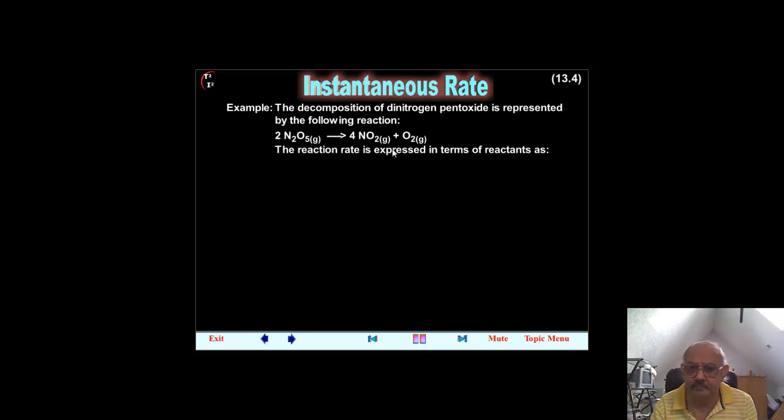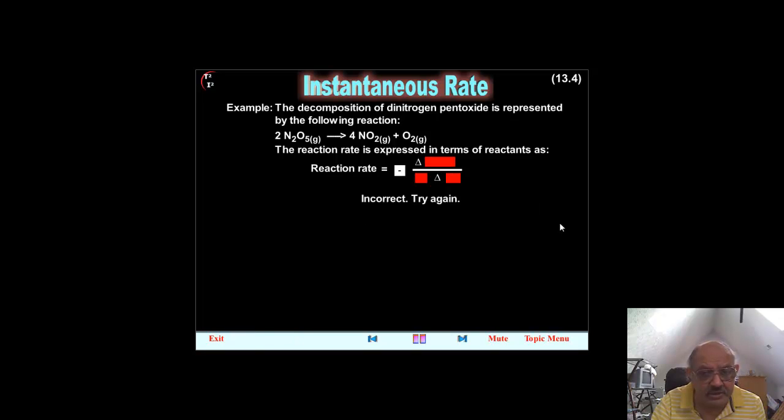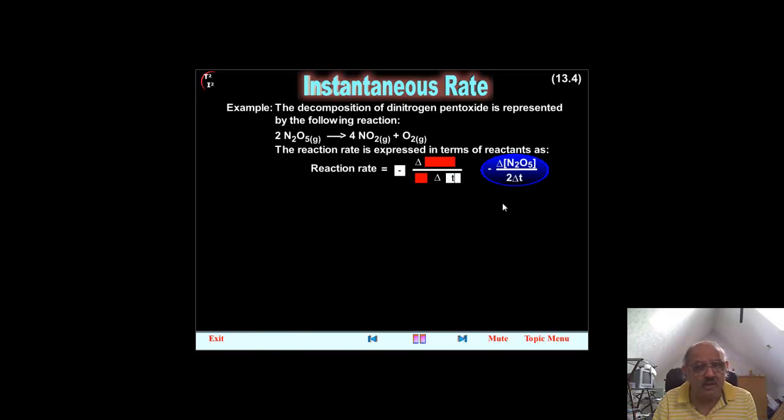The reaction rate is expressed in terms of reactants as reaction rate equals. And this is what the student has to do interactively. For every interactivity, we give you two tries, after which we give you the right answer. For example, in this particular case, if the student types in negative and presses enter, it tells you where you are right and where you are wrong. The next time, if a student just types in its delta T and you put it in, the second time, you can see it gives you the right answer.